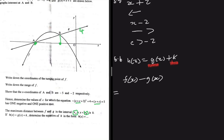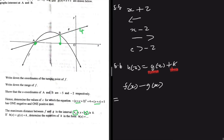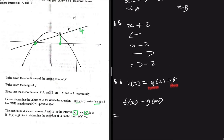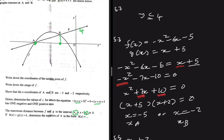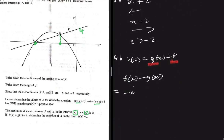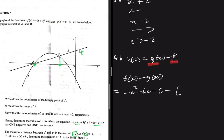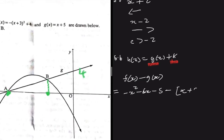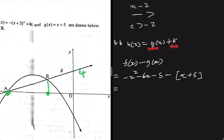So f(x) - g(x) gives us the distance equation. f(x) = -x² - 6x - 5 and we subtract g(x) = x + 5. We're trying to find an equation for the distance between the two graphs. So we get: -x² - 7x - 10.